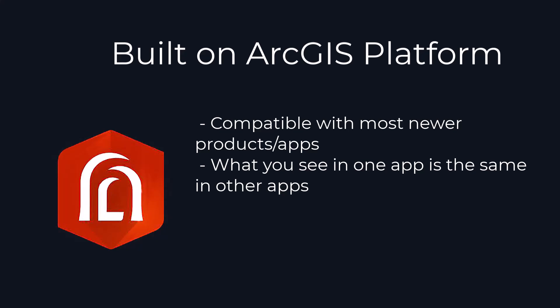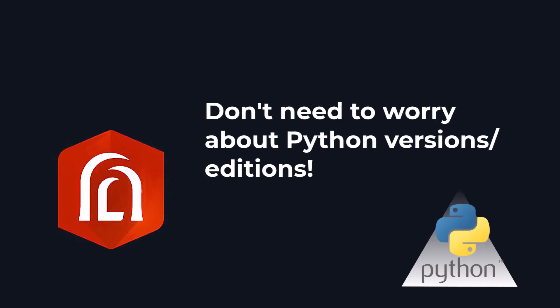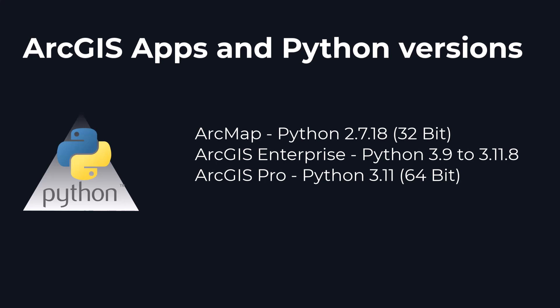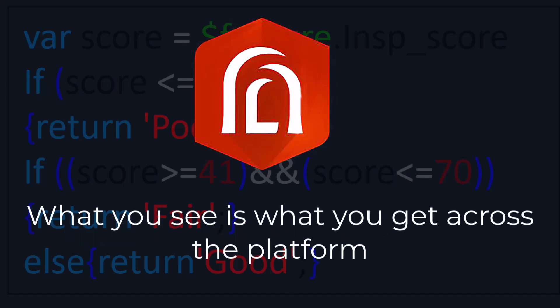If I create a labeling expression in Python in ArcMap and publish that to ArcGIS Online, I would not always get the same results. Part of this is due to differing versions of Python being used — ArcMap uses one version, ArcGIS Online uses another, and ArcGIS Pro yet another. Because of that incompatibility, we don't always get the same result. With Arcade being an Esri-developed language built inside the ArcGIS platform, we don't get those inconsistencies or conflicts. We see a much more consistent result.